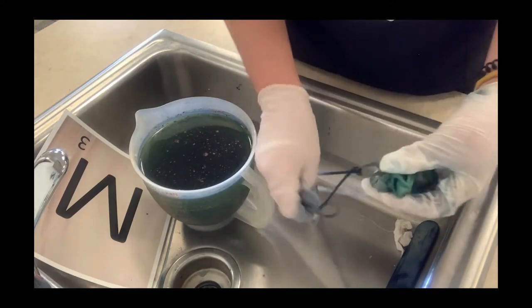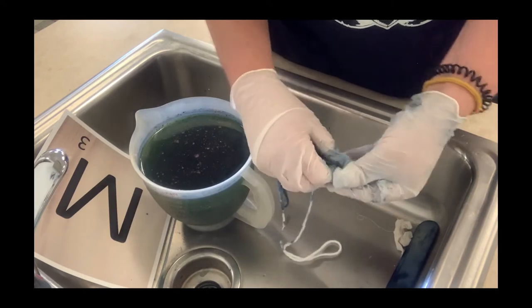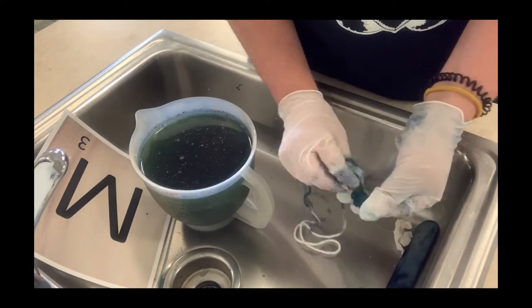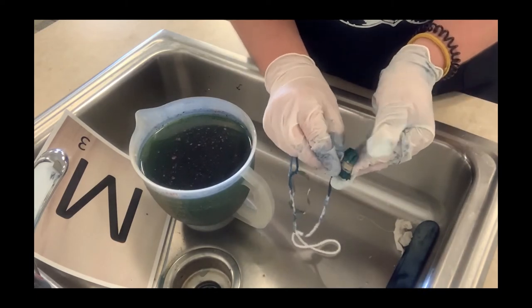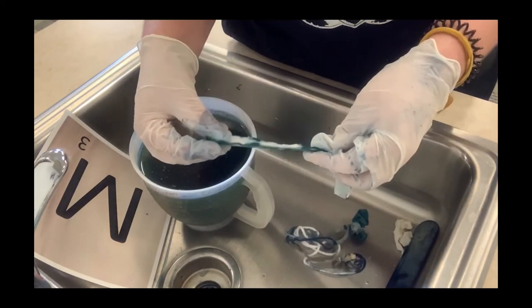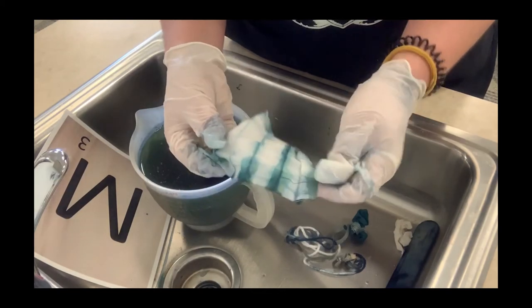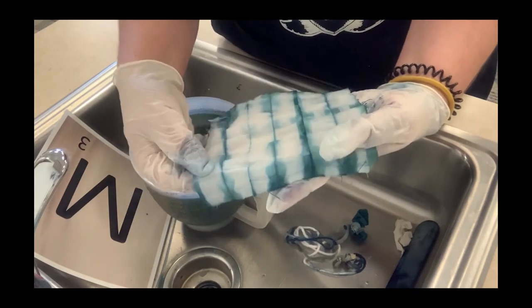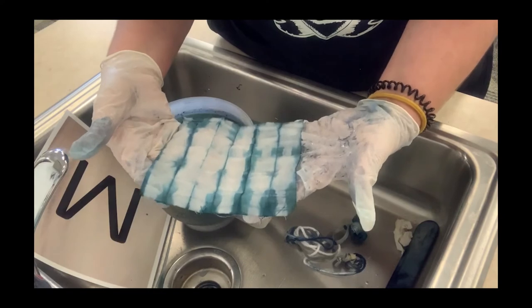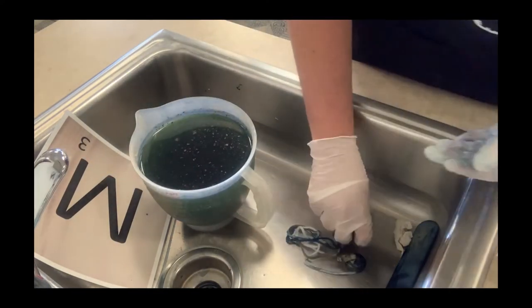This is the real fun of indigo - removing your rubber bands and seeing what we made. Here's our first one. You can see our accordion folding left this grid pattern, which is kind of fun. I'm going to set this aside and let it fully oxidize and turn blue.